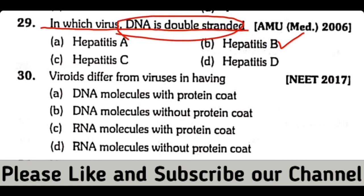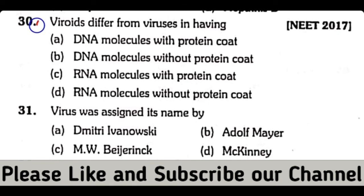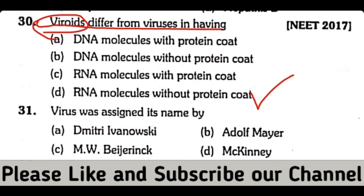Question number 30. Viroids are different from viruses in having: DNA molecules with protein coat, DNA molecules without protein coat, RNA molecules with protein coat, or RNA molecules without protein coat. So the correct answer is option D. Viroids are basically RNA molecules without a protein coat, which is why they are different from viruses.